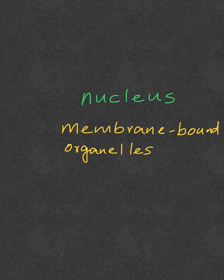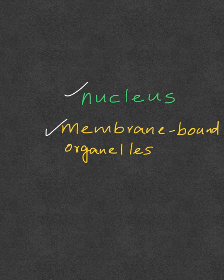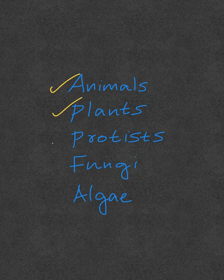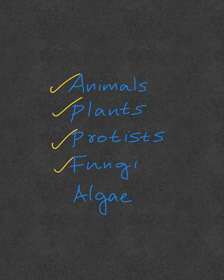Eukaryotic cells, in addition to having a nucleus, also have other membrane-bound organelles. Eukaryotes include animals, plants, protists, fungi, and algae.